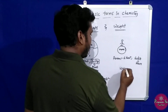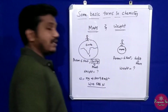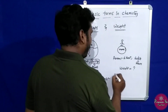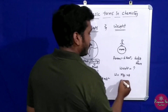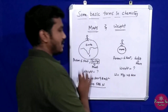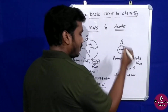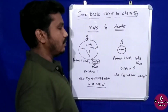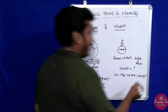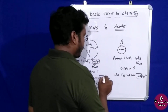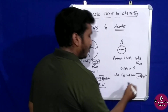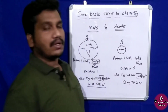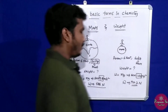Weight is changed because weight changes by place. Using the same formula weight equals mg, if mass is 60 kg and gravity on the moon is 1.62 m/s², the weight on the moon would be approximately 97.2 Newtons, compared to 588 Newtons on Earth. So weight is changing.